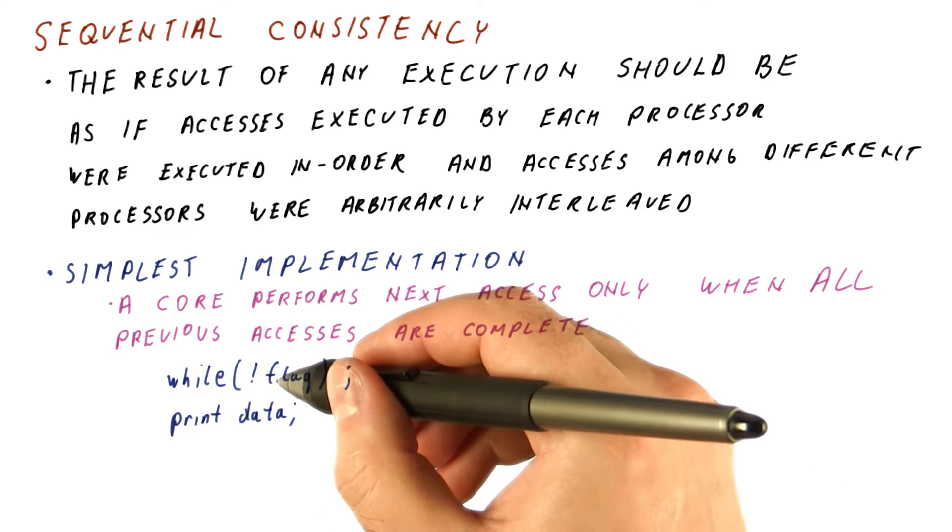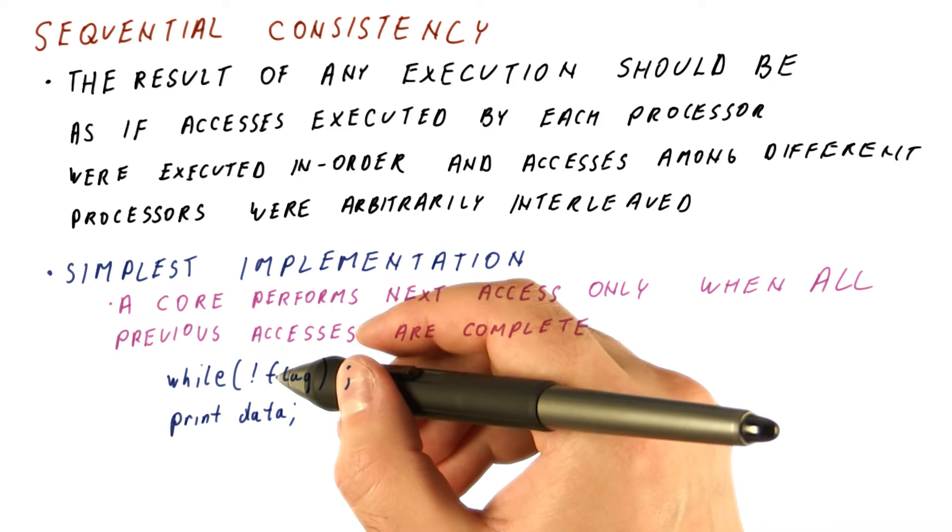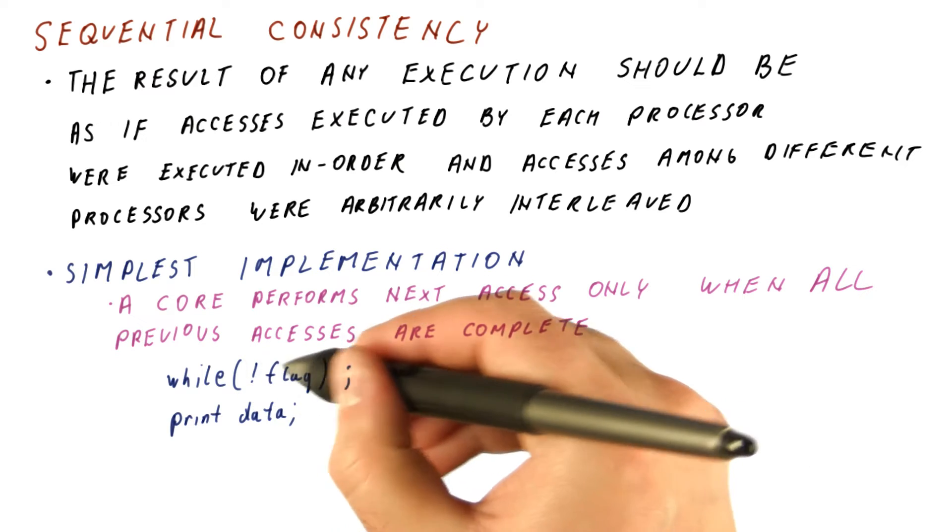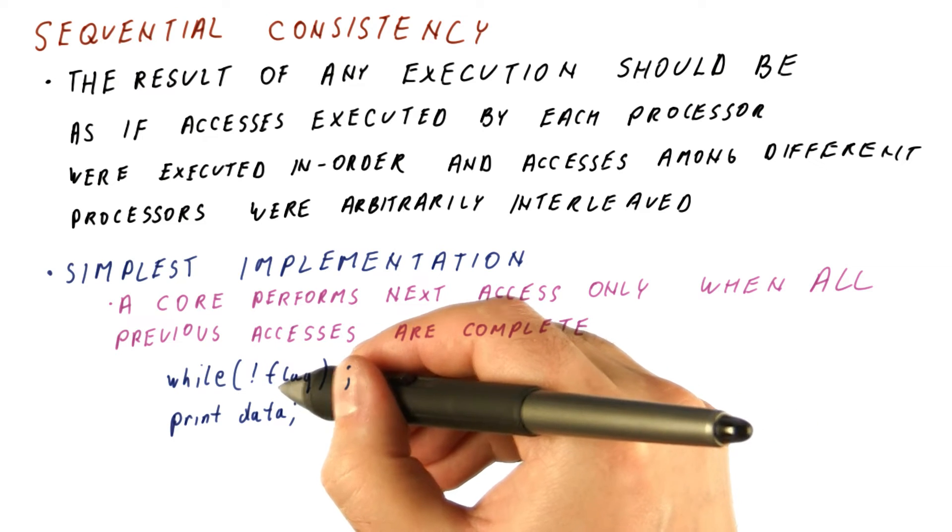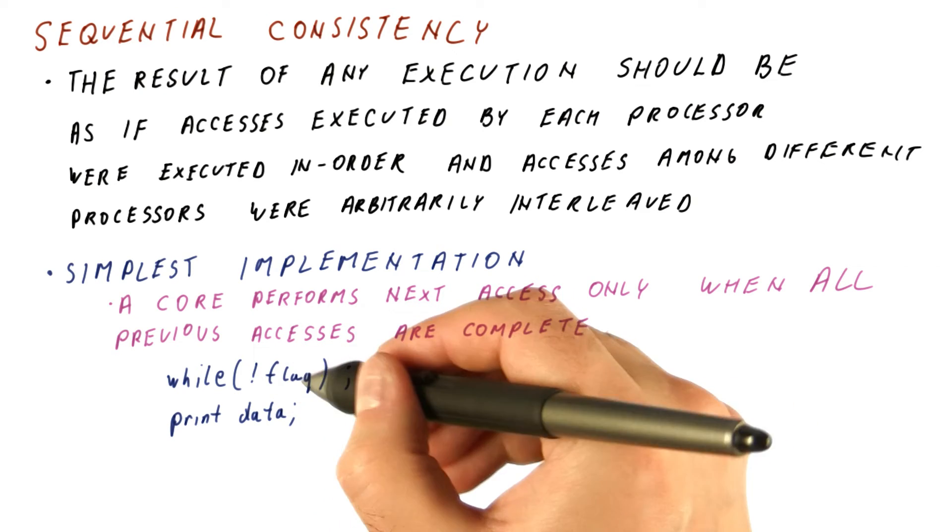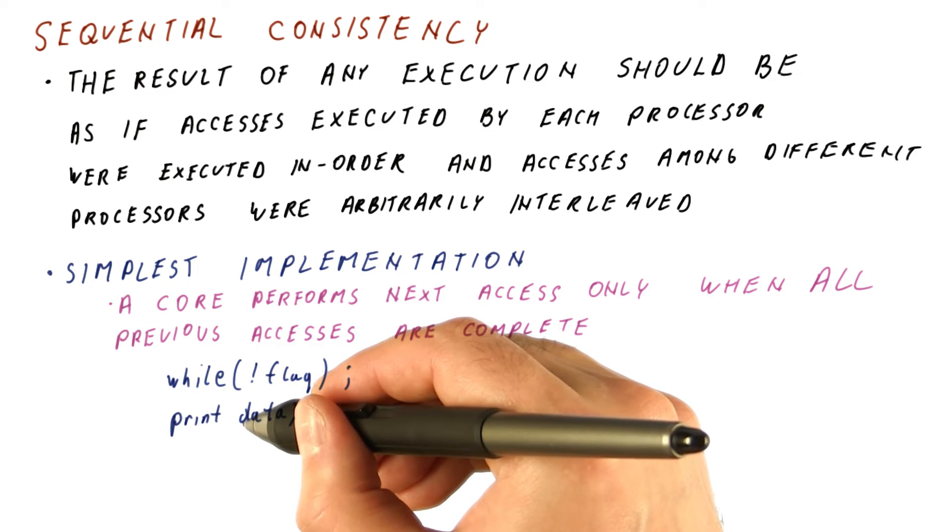Remember that the problem in previous examples was that we branch predict this and leave and read the data, then read the flag and confirm our prediction. Now we can still predict but when we get to reading the data, we have to delay that until the flag has been read.